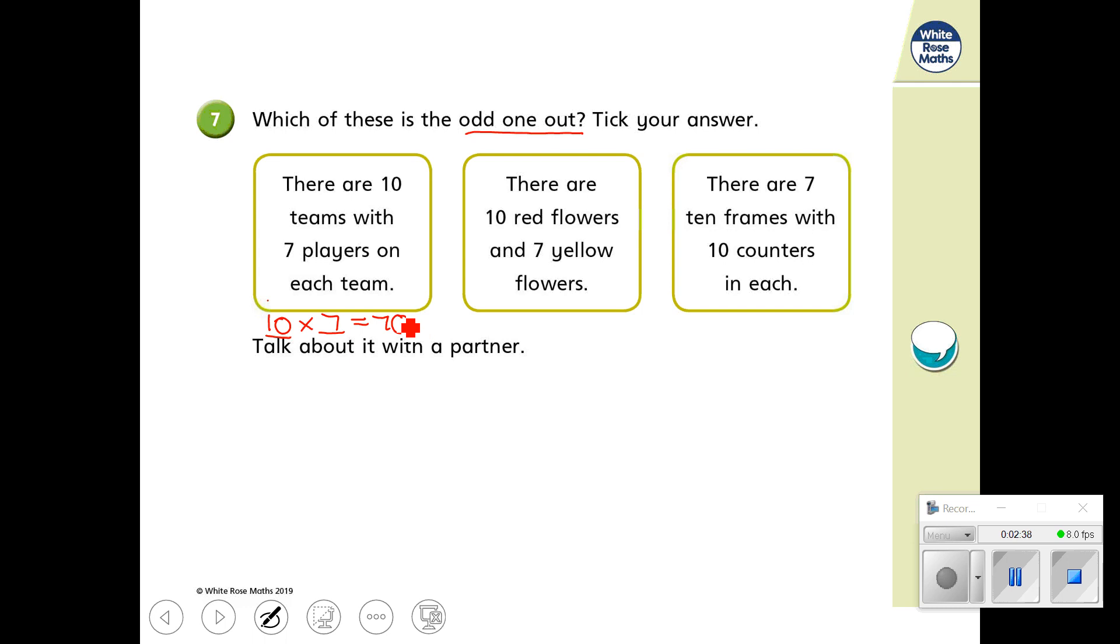Let's move on. I have 10 red flowers and 7 yellow flowers. Oh, so it's not groups. Here I'm just adding, so I've got 10 and 7, which means 17 flowers.